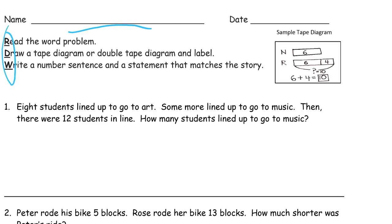It's read, draw, and write — RDW is our memory key for that. So it's read the word problem, and when I read it I like to summarize it like a short two or three sentence story, which is usually not that hard to do as long as you can read it. Then draw a tape diagram or a double tape diagram and label, and then write a number sentence and a statement that matches the story.